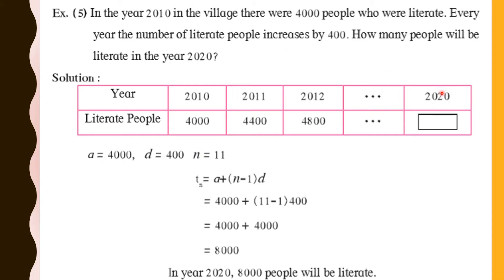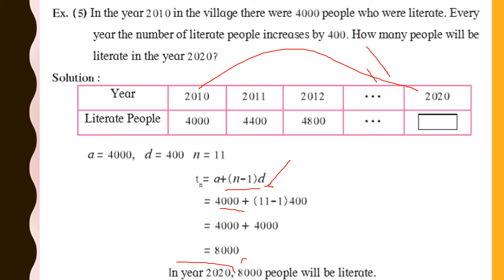From 2010 to 2020, how many terms do you have? So what is your n value? Apply the formula of t_n: t_n = a + (n − 1) × d. Here d is 400 and a is 4000. Putting the values, we get 4000 + (11 − 1) × 400 = 4000 + 4000 = 8000. So in 2020, 8000 people will be literate.